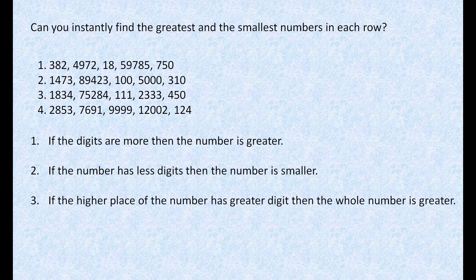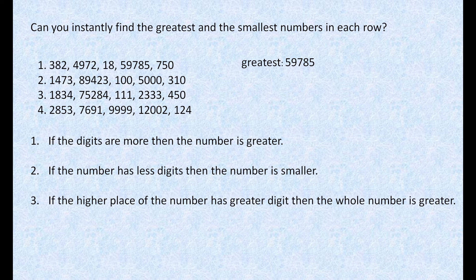By using these three rules. The first rule says that if the digits are more, then the number is greater. Here, 59,785 has the most digits, so the greatest number is 59,785. Now we will use the second rule to find the smallest number: if the number has fewer digits, then the number is smaller. Of course, 18 is the smallest number, because it has only two digits.